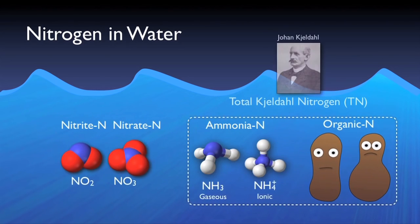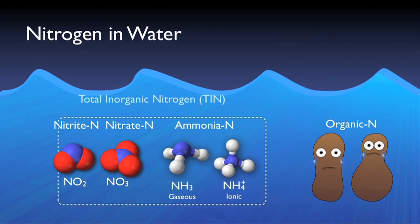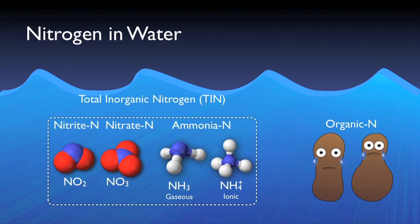TKN, or total Kjeldahl nitrogen, named after the scientist Johan Kjeldahl, is the sum of only organic nitrogen and ammonia nitrogen. TIN, or total inorganic nitrogen, is just as the name implies — total nitrogen minus the organic nitrogen.